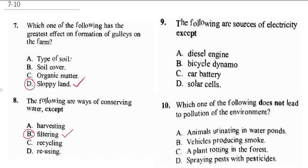Question 9 says: the following are sources of electricity except — A: diesel engine, B: bicycle dynamo, C: car battery, D: solar cells. A bicycle dynamo can help you produce electricity because it's connected with an alternator; when you drive a bicycle, mechanical energy is converted and it can generate electricity to put on the light. A car battery gives you direct current. Solar cells are also a source of electricity. A diesel engine can generate power but it's not a conventional or clean source of energy. So the correct answer is A — diesel engine.